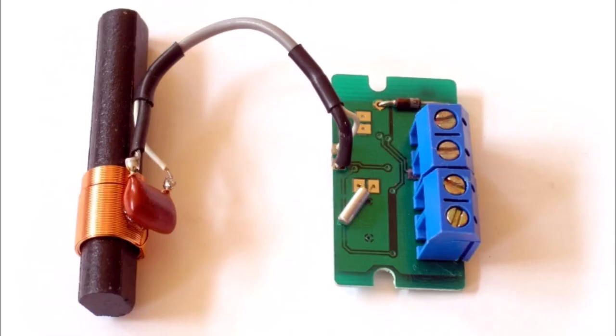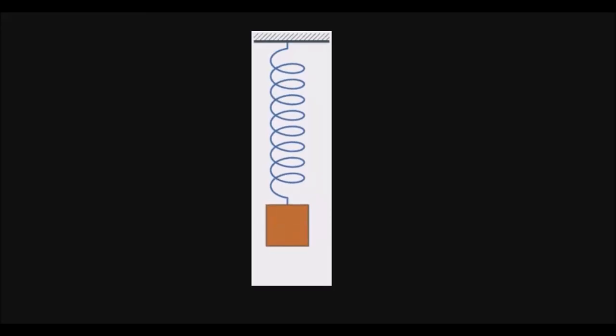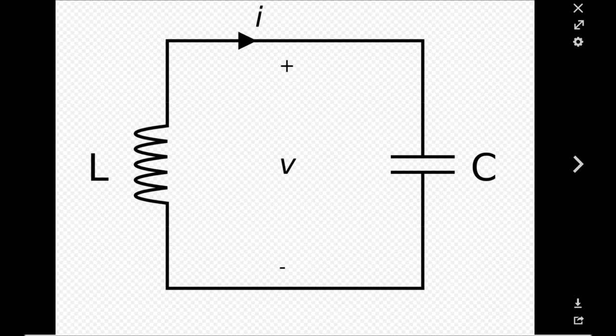An LC circuit is an idealized model since it assumes there is no dissipation of energy due to resistance. Any practical implementation of an LC circuit will always include loss resulting from small but non-zero resistance within the components and connecting wires. The purpose of an LC circuit is usually to oscillate with minimal damping, so the resistance is made as low as possible. While no practical circuit is without losses, it is nonetheless instructive to study this ideal form of the circuit to gain understanding and physical intuition for a circuit model incorporating resistance: the RLC circuit.